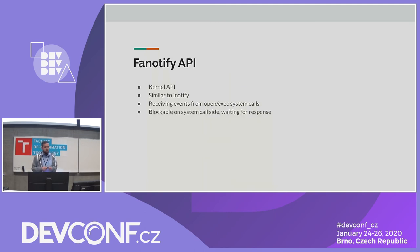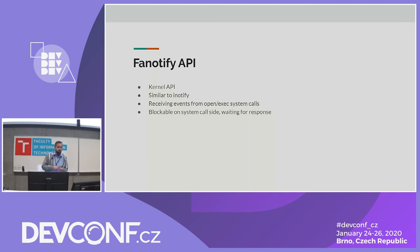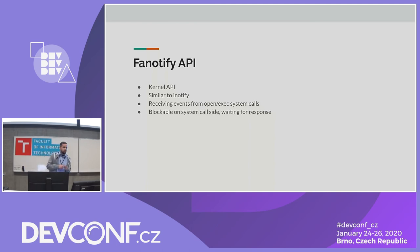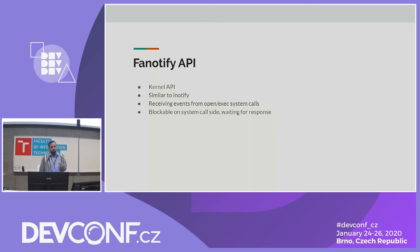FANotify API is a kernel API which is similar to inotify. This API can watch filesystem events based on system calls like open, close, read, and write. But FANotify can also watch the exec system call and it is blockable on the system call site — meaning the system call is held while the watcher is formulating a response.